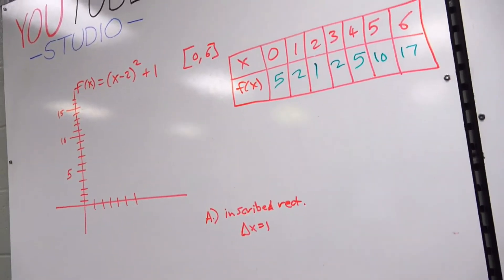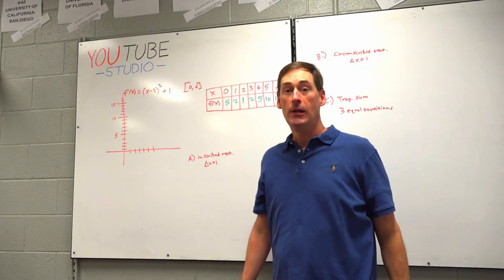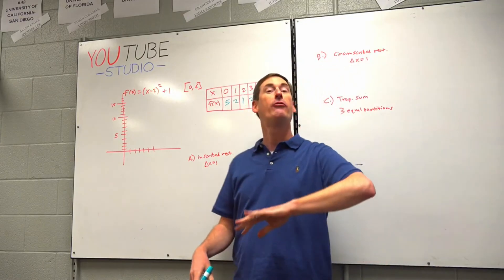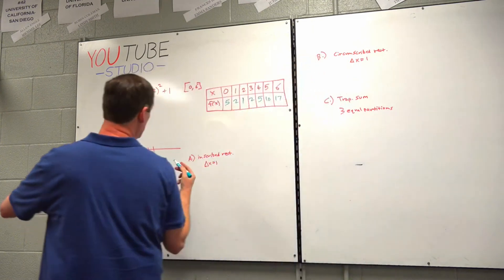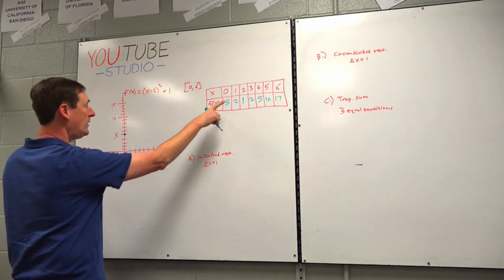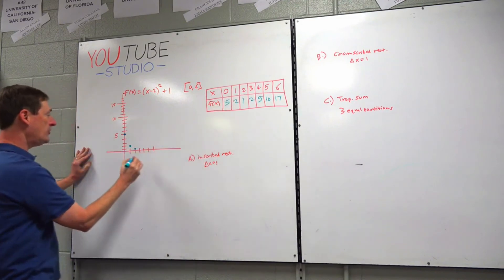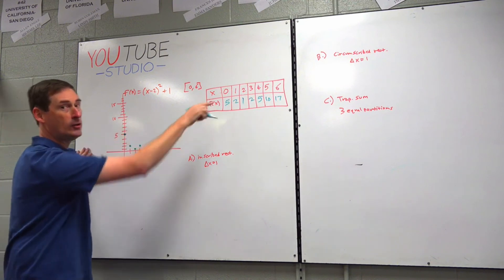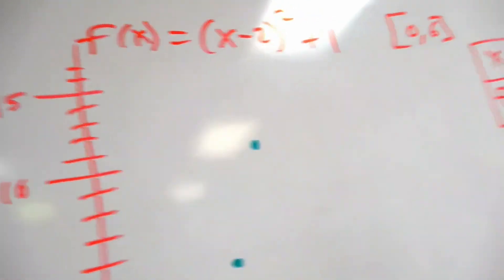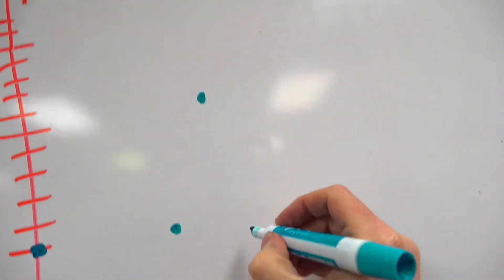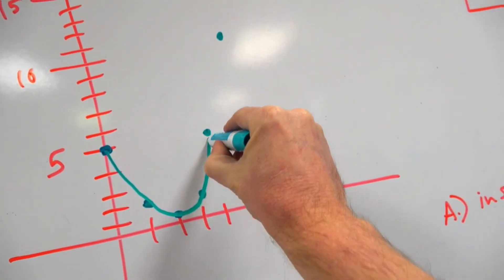Only for this one section in all of calculus would you actually graph these very specific points. Let's graph them: 0,5 — up 5; 1,2 — right 1, up 2; 2,1 — right 2, up 1; 3,2 — right 3, up 2; 4,5 — right 4, up 5; 5,10 — right 5, up 10; and 6,17 — right 6, up 17, a little bit above the 15. Let's connect the dots and we get a nice U-shape — a parabola. It's only on 0 to 6, so it's a section of a parabola.